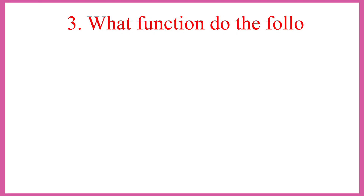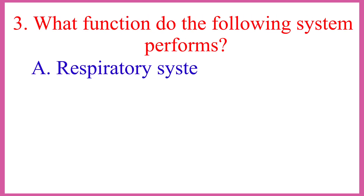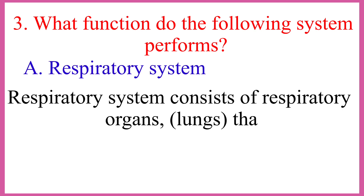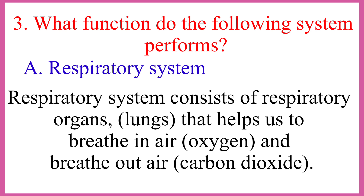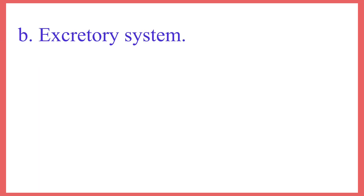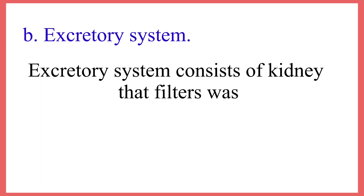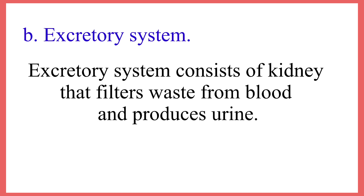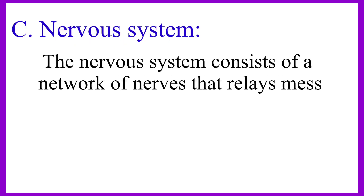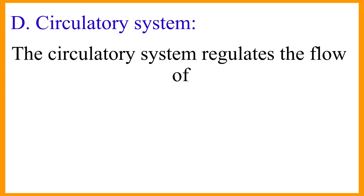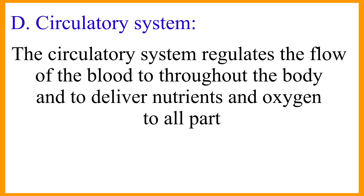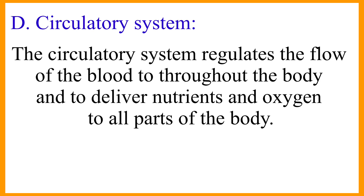What functions do the following systems perform? Respiratory system consists of respiratory organs — lungs — that help us to breathe in air (oxygen) and breathe out air (carbon dioxide). Excretory system consists of kidneys that filter waste from blood and produce urine. Nervous system consists of a network of nerves that relays messages to the various parts of the body. Circulatory system regulates the flow of blood throughout the body to deliver nutrients and oxygen to all parts of the body.